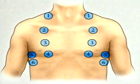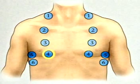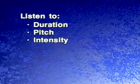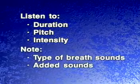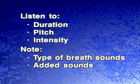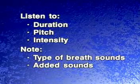To auscultate the anterior chest, take the same systematic approach you used for percussing the anterior thorax. If necessary, gently displace the patient's breasts to auscultate all important areas. Listen to the duration, pitch, and intensity of the inspiratory and expiratory sounds. Decide what type of breath sounds you are hearing and note any added sounds. If you hear heart sounds near the heart, try to ignore them while you concentrate on the breath sounds.